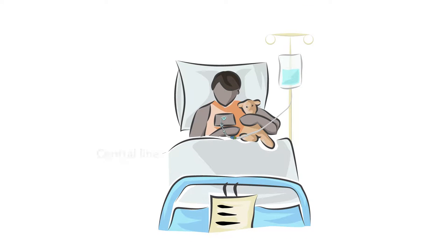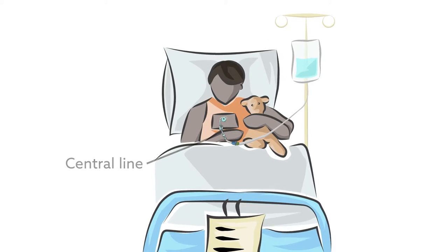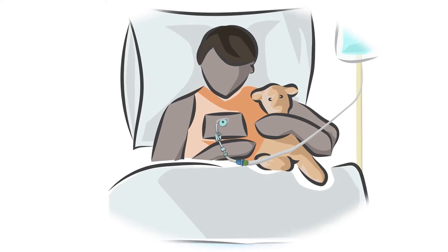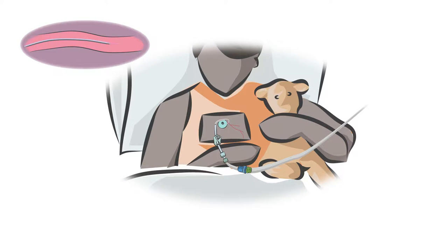For many sick children, central venous catheters, or central lines, are lifelines. The tubes are entryways for critical nutrients or medicines. Threaded inside veins, they can deliver needed fluids and allow for frequent blood draws without needle pricks.